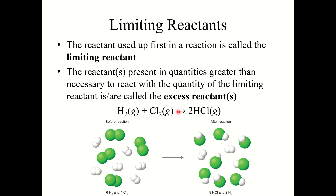Let's look at a more scientific example. Our reaction is H2 plus Cl2 forms two HCl. This means one molecule of H2 plus one molecule of Cl2 forms two molecules of HCl. Before the reaction, I've got six molecules of H2 and four molecules of Cl2. The Cl2 is the limiting reactant because it gets used up first. Four molecules of H2 and four molecules of Cl2 combine to produce eight molecules of HCl. Once those eight molecules of HCl are made, all of the Cl2 is gone. So H2 would be the excess reactant.